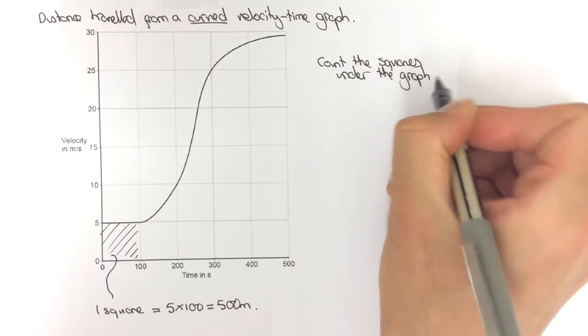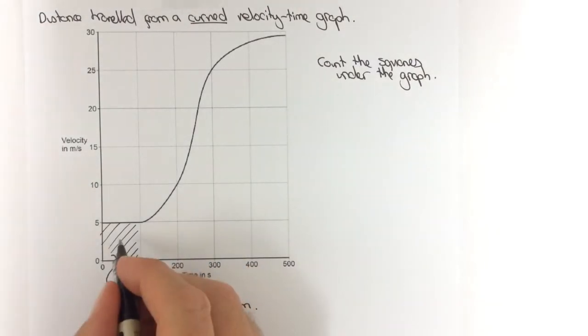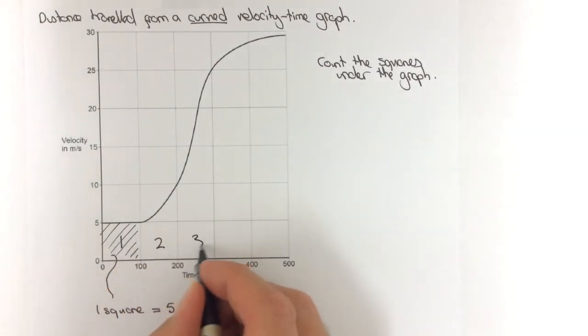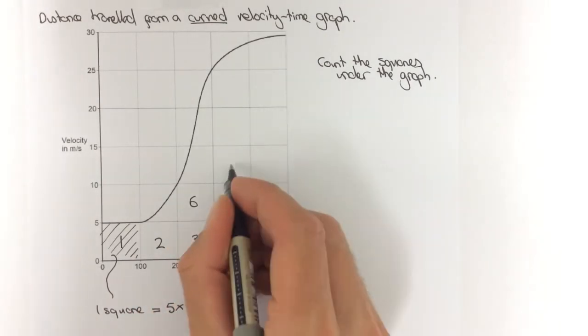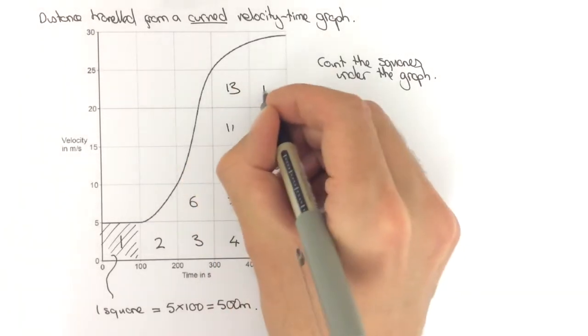So if we do that, what's quite helpful is to first of all count up the complete squares. So we'd have 1, 2, 3, 4, 5, near enough 6, 7, 8, 9, 10, 11, 12, 13, 14.